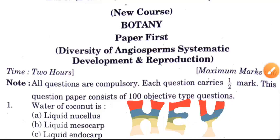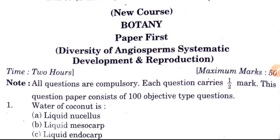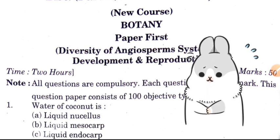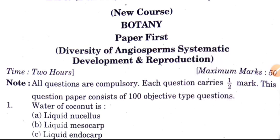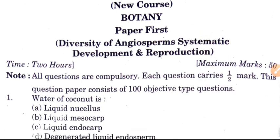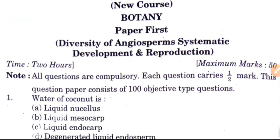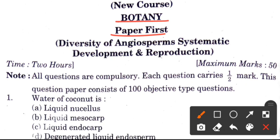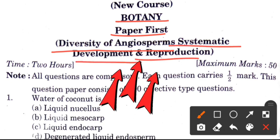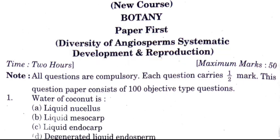Hi guys, how are you all? Today we are going to study about BSc second year Botany first paper in objective form for all universities. Before starting this video, please don't skip it because the questions have a lot of exam chances. Also check the description box as it contains useful links related to this content. Today's paper is Botany Paper First: Diversity of Angiosperms, Systematic Development and Reproduction.